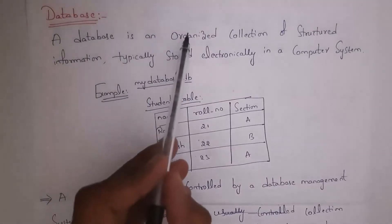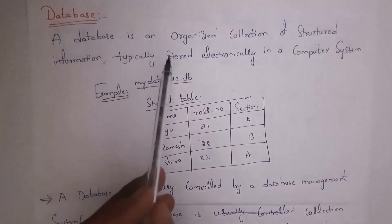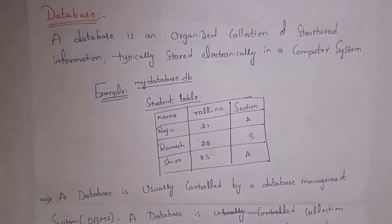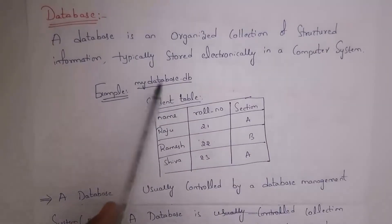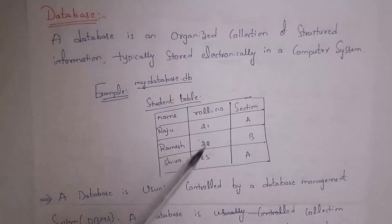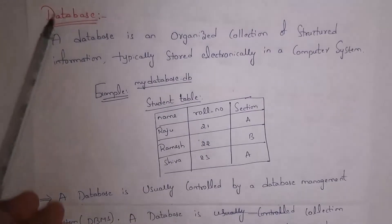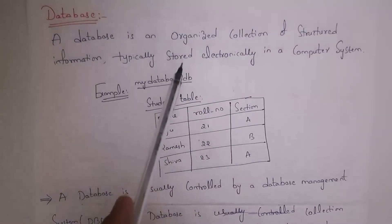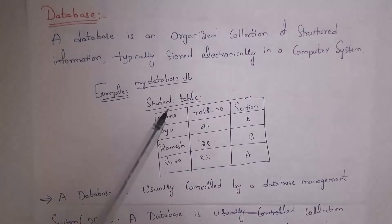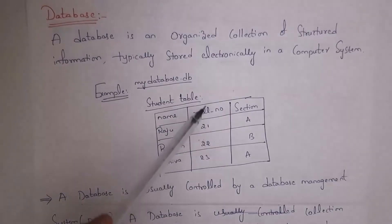A database is an organized collection of structured information, typically stored electronically in a computer system. For example, my database name is 'my database'. Inside this database I created one student table. The student table contains names Raju, Ramesh, Shiva, roll numbers 21, 22, 23, and sections A, B, A.